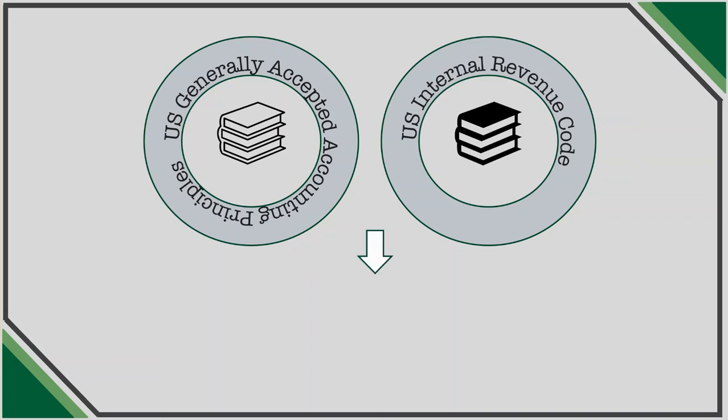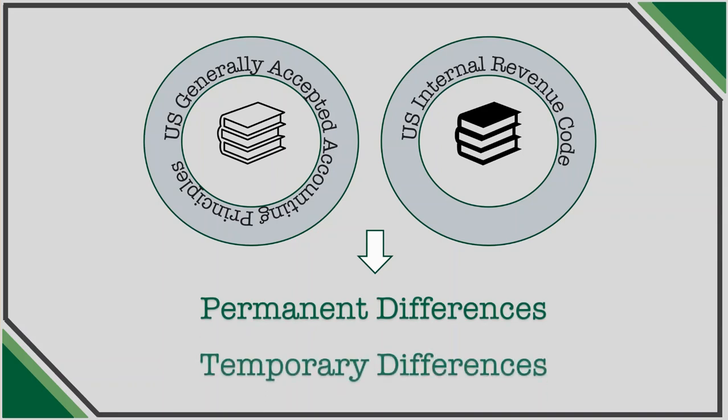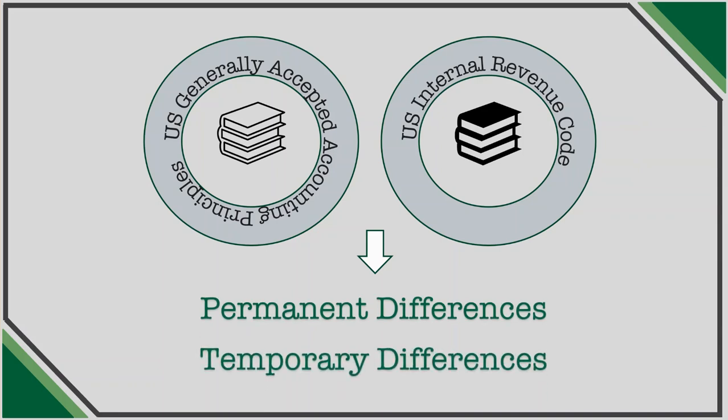These differences may be permanent or temporary in nature. Some of the differences are merely a matter of timing as to when a certain item of revenue or expense is recorded, making them temporary. However, when a book item of income or loss is either never taxed or never permitted to be deducted on a tax return, it creates a permanent difference in the computations of income.